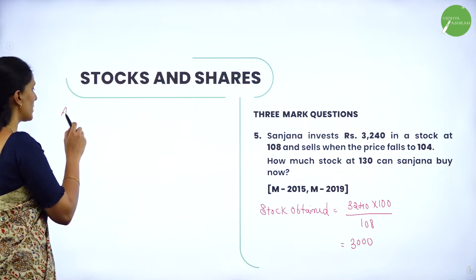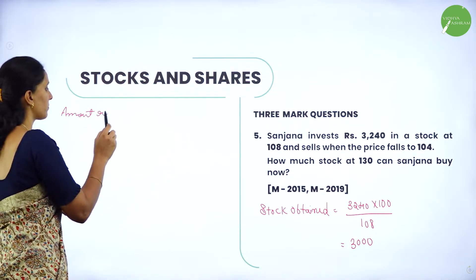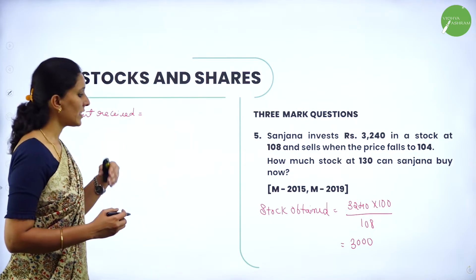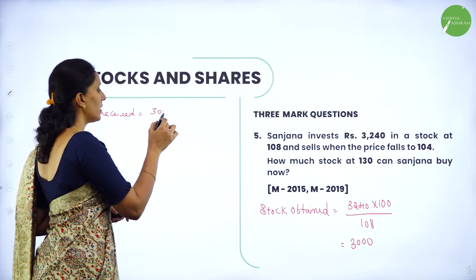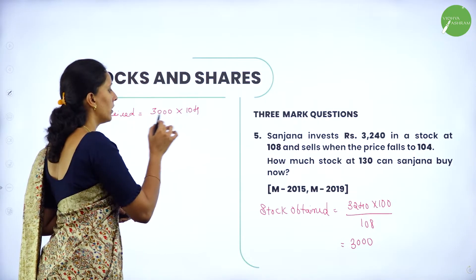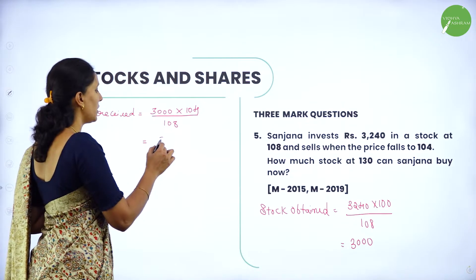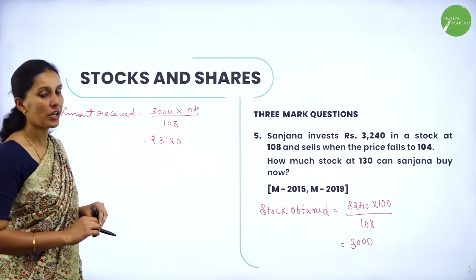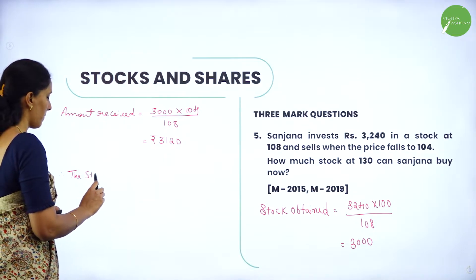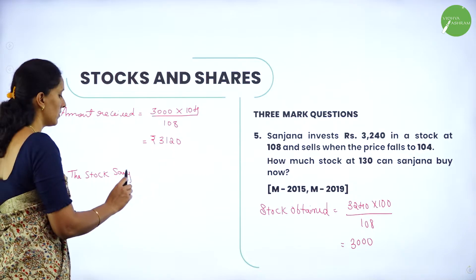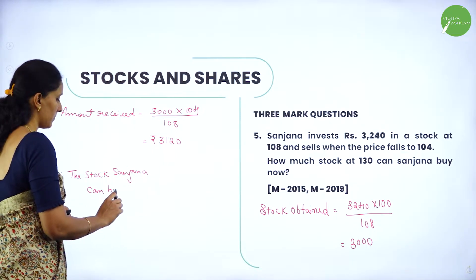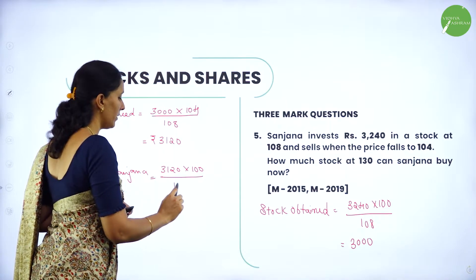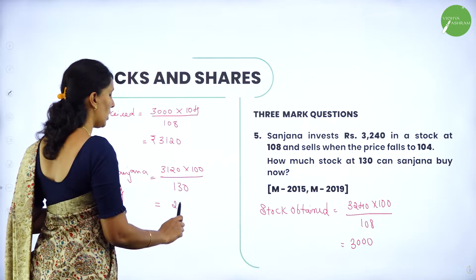Now she sells the stock at 104. Amount received = 3000 × 104 / 100, giving Rs.3120. Finally, the stock Sanjana can buy at 130 = 3120 × 100 / 130, whose value is Rs.2400.